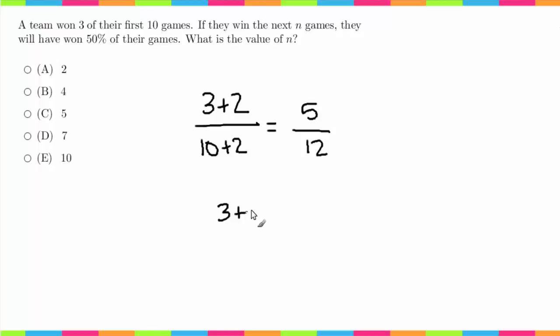We write (3 + n) over (10 + n) equals 1/2, because they've won three games, they're going to win the next n games, and that's going to be out of their total of the 10 they've already played plus the next n that they'll play. That equals 1/2 because they've won 50% of their games. If this part confuses you, you can definitely just try out each